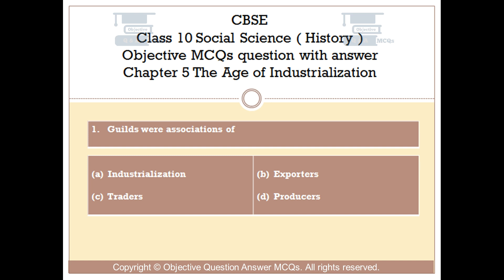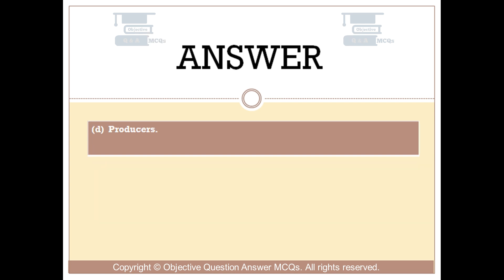Question number 1. Guilds were associations of: Option A, industrialization; Option B, exporters; Option C, traders; Option D, producers. The right answer is Option D: Producers.